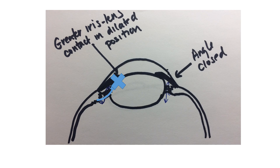Aqueous humor cannot leave the eye and is continuously produced, leading to very high levels of eye pressure. This high pressure in acute angle closure is extremely painful and is frequently associated with nausea and vomiting. The high pressure leads to congestion of blood vessels over the entire surface of the eye — hence the red eye.